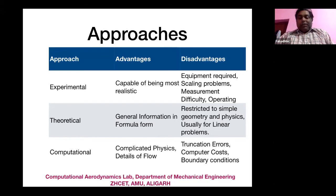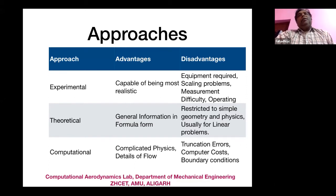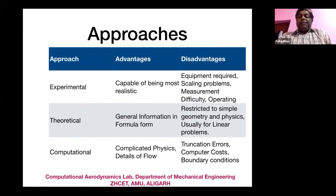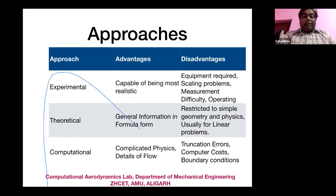The second approach is the theoretical approach, which provides general information in formula form. For example, for inviscid flow past a circular cylinder, the pressure variation is given by 1 minus 4 sin²θ — elegant and appealing. However, if you use this to calculate drag, you get zero drag, though lift is predicted accurately. To achieve a good theoretical solution, approximations like the inviscid assumption are required, which clearly fails to predict drag — this is the well-known d'Alembert's paradox.